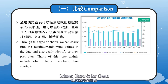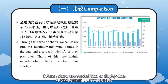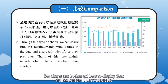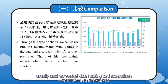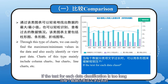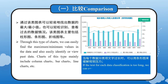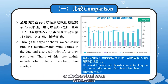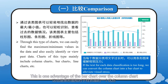Column charts and bar charts: Column charts use vertical bars to display data, usually used to show horizontal changes and comparisons in data. Bar charts use horizontal bars to display data, usually used for vertical data ranking and comparison. If the text for each data classification is too long, we can convert the column chart into a bar chart to alleviate visual stress. This is one advantage of the bar chart over the column chart.